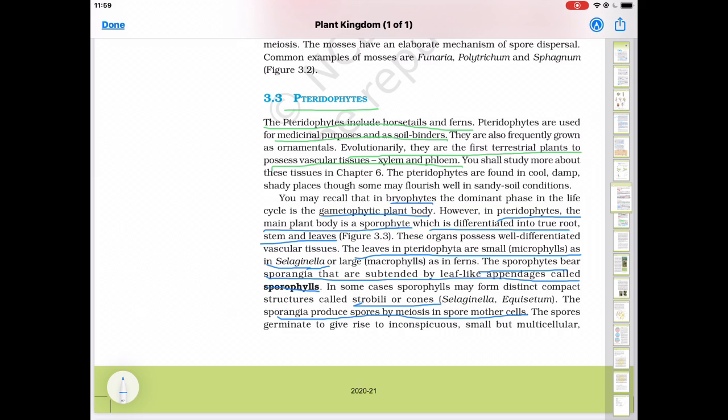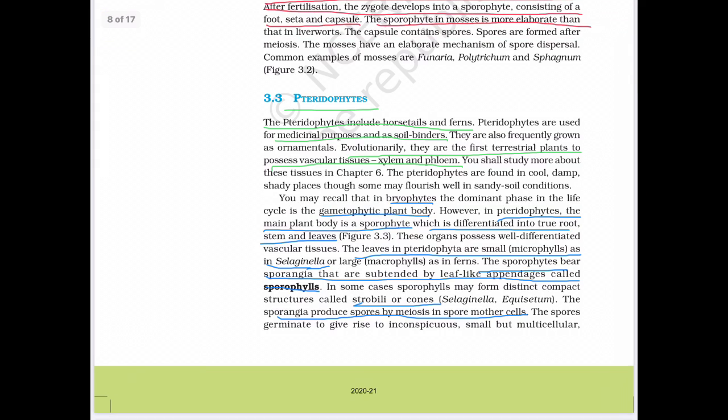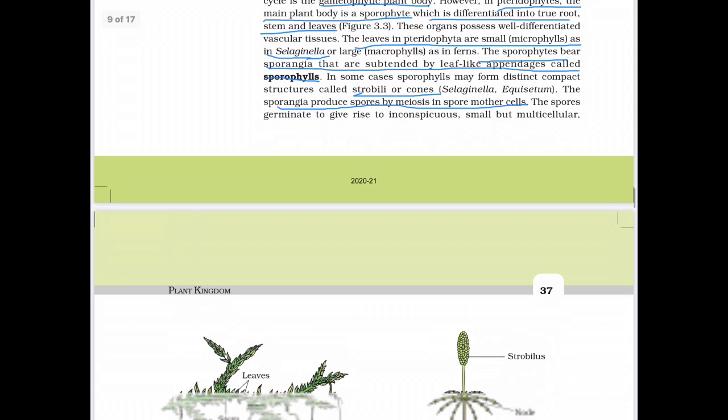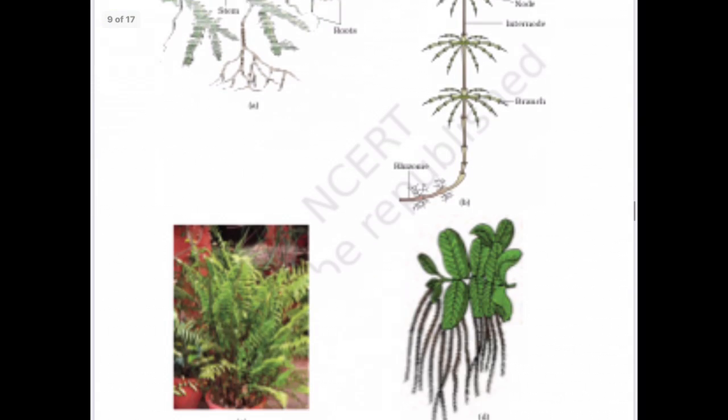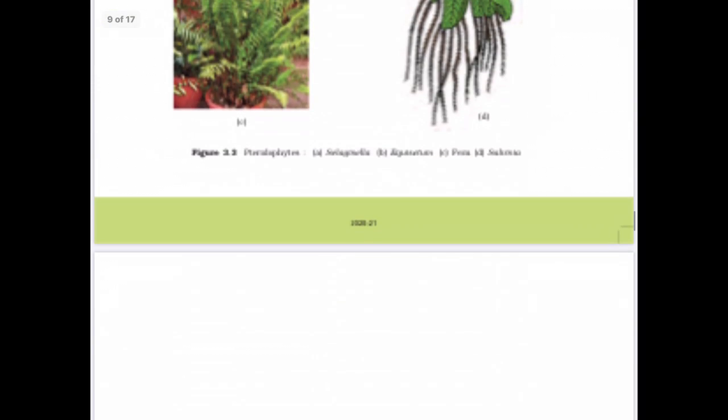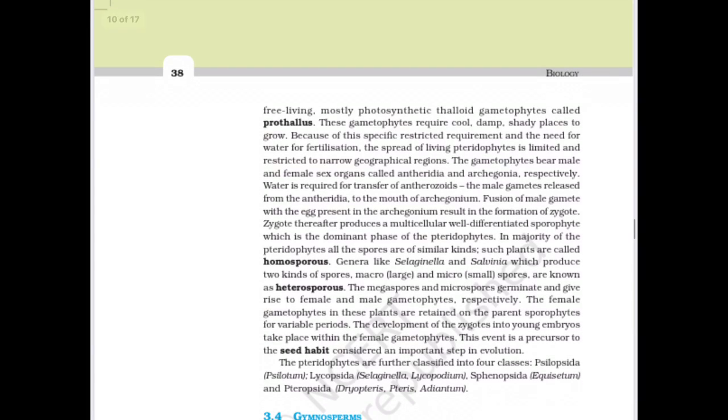The spores germinate to give rise to inconspicuous small but multicellular living free-living mostly photosynthetic thalloid gametophyte called prothallus. The spores then germinate and forms a heart-shaped structure known as prothallus. Prothallus is green and photosynthetic in nature.